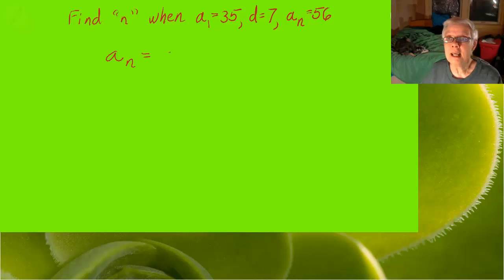Here's our formula, a sub n equals a sub 1 plus n minus 1 times d. Let's substitute some numbers. 56 equals 35 plus n minus 1 times 7.